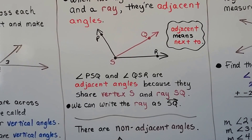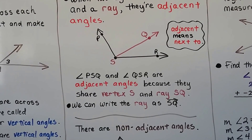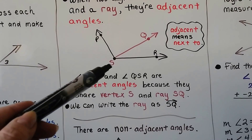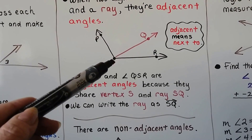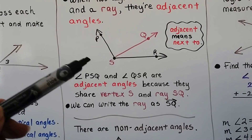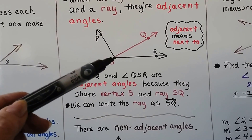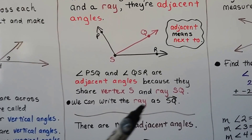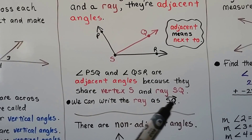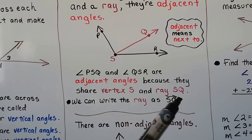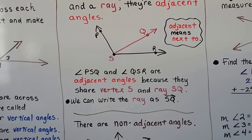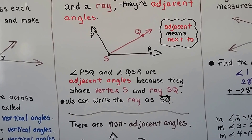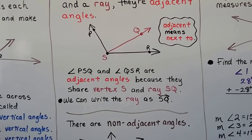They're adjacent angles because they share vertex S and they share ray SQ. We can write the ray as SQ with a line going in one direction towards the right — that's how you would do it in notation.